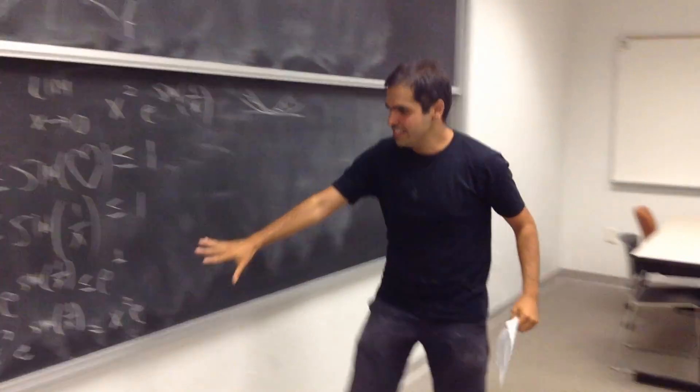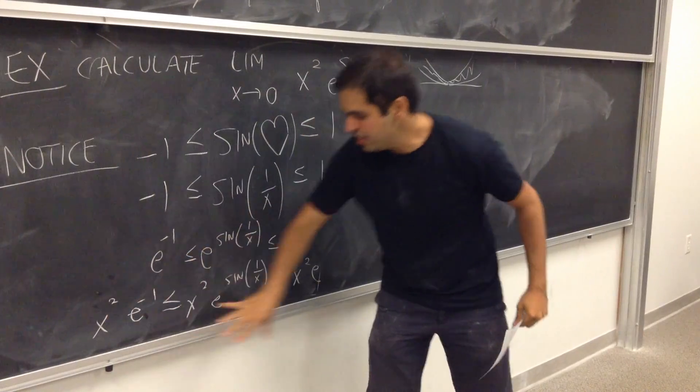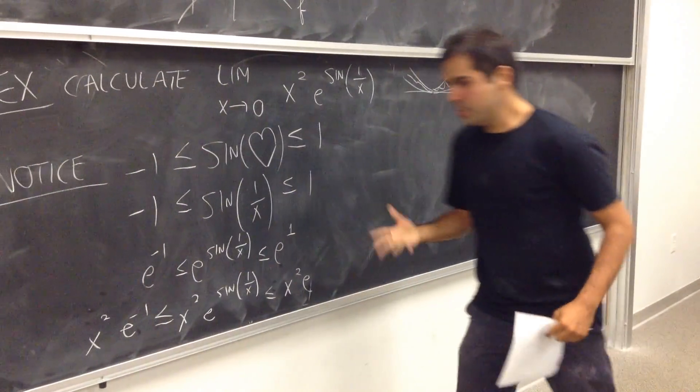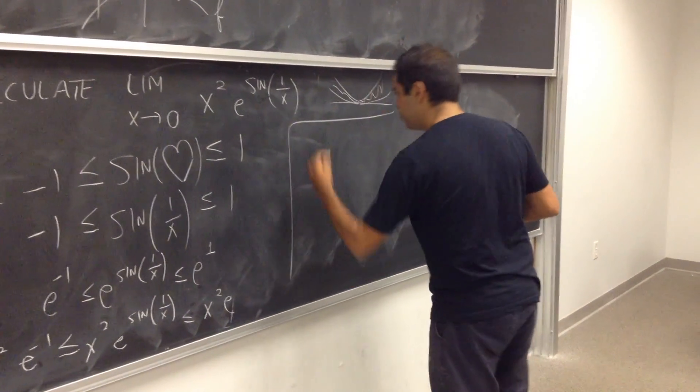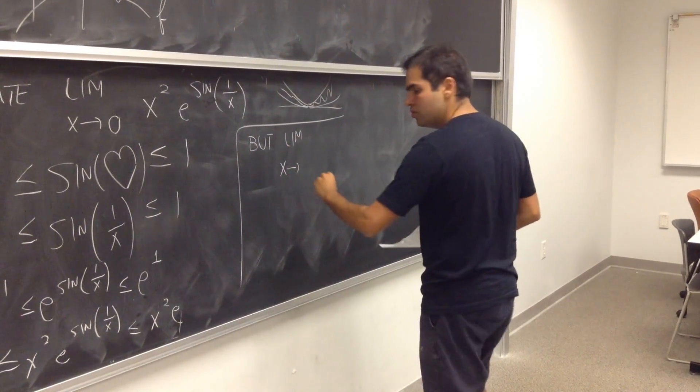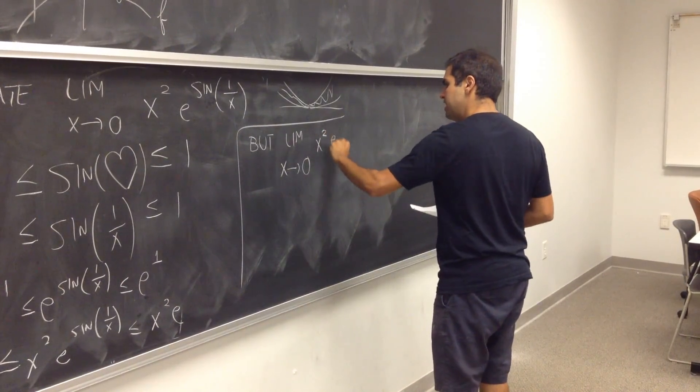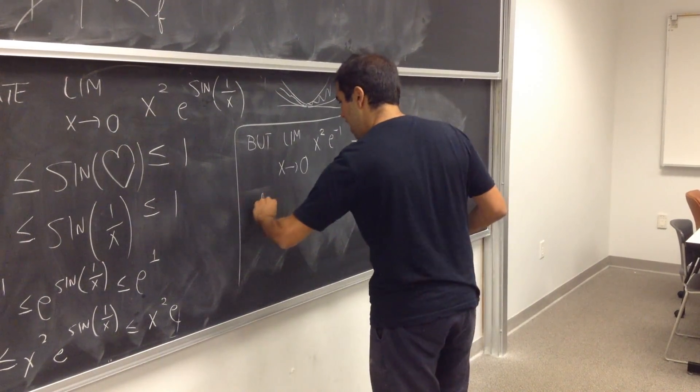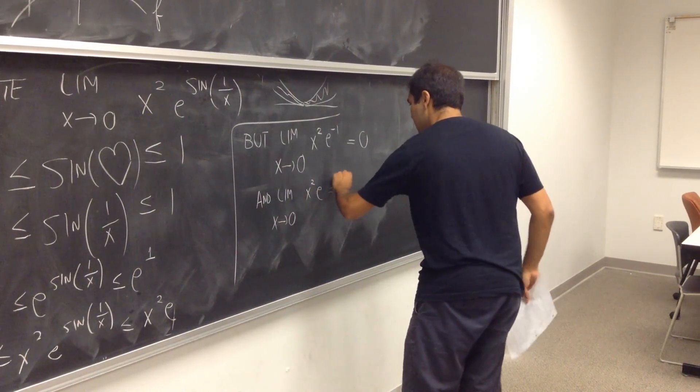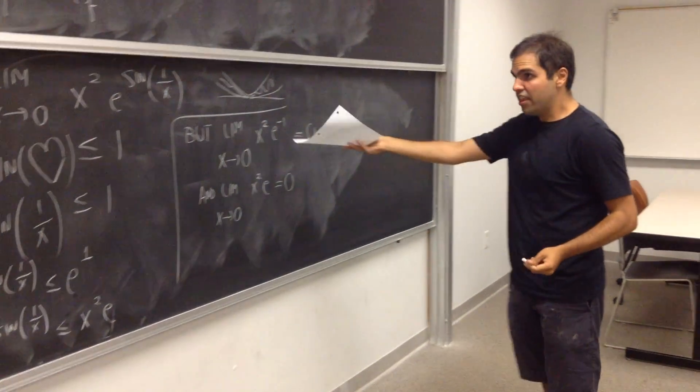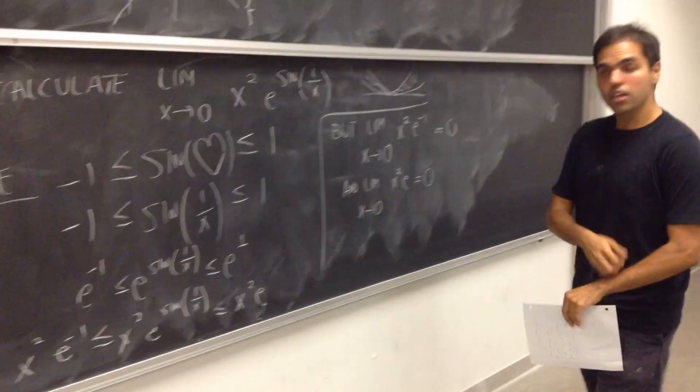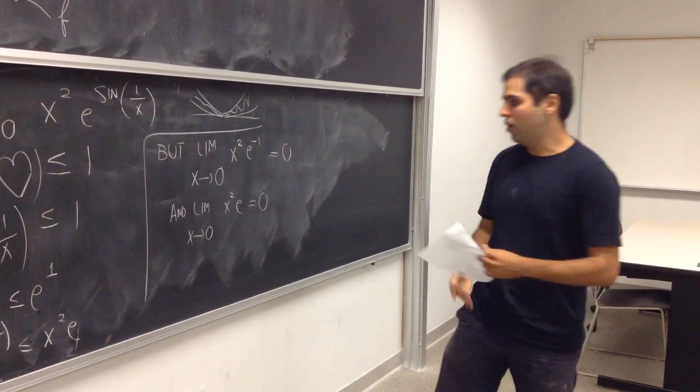That's zero. So, in other words, this function is squeezed between this function and this function. But what else do we know? Well, we know that those two functions have a common limit. That limit x goes to zero of x squared e of minus one. That's zero. And limit x goes to zero of x squared e equals to zero. And therefore, by the squeeze theorem, because this function is squeezed between the two other ones, we can conclude that the middle limit is also zero.